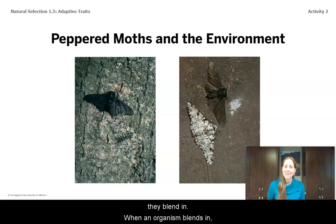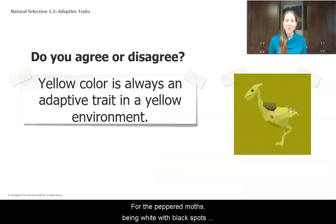When an organism blends in, that's called camouflage, and camouflage is an adaptive trait. For the peppered moths, being white with black spots was an adaptive trait when the trees were white with black spots.